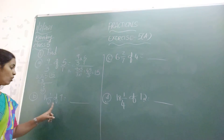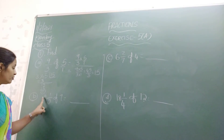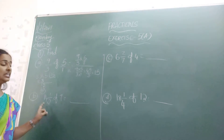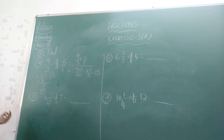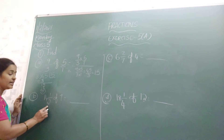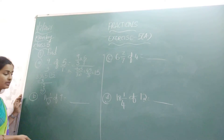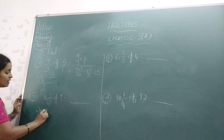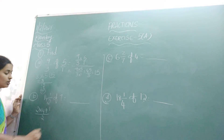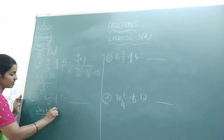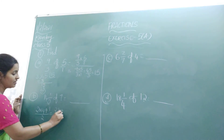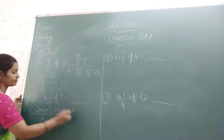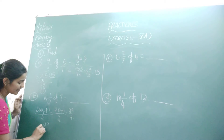The next problem: 14 and 1 by 2 of 7 is equal to what? Here 14 1 by 2 is a mixed fraction, so we need to change it to an improper fraction. First, multiply the denominator with the whole number: 2 into 14, then add the numerator 1. 2 times 14 is 28: 2 fours are 8, 2 ones are 2, giving 28. 28 plus 1 is 29, so we get 29 by 2.